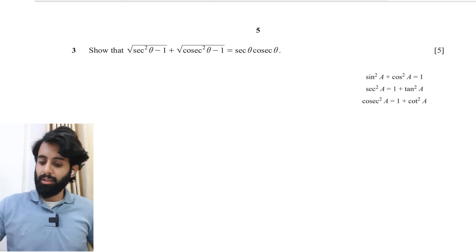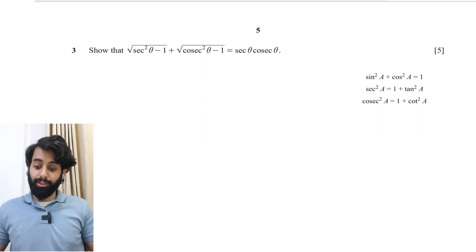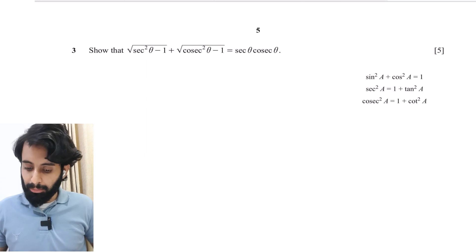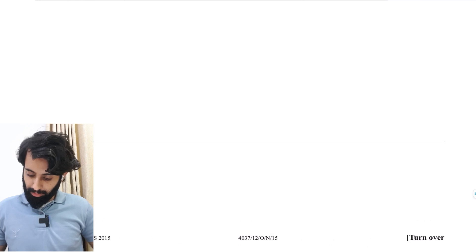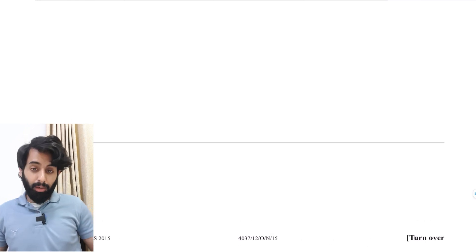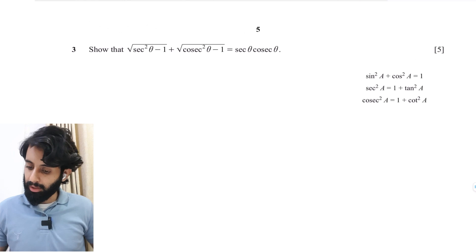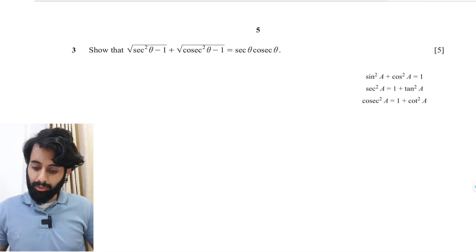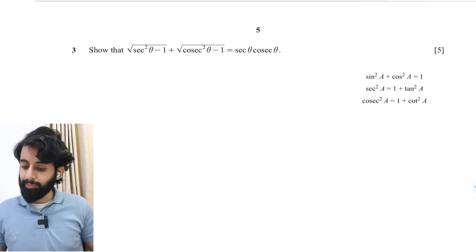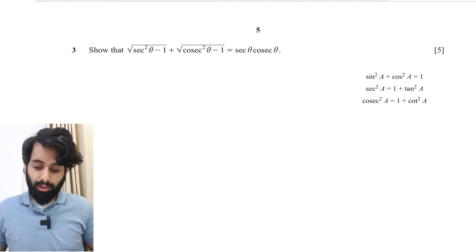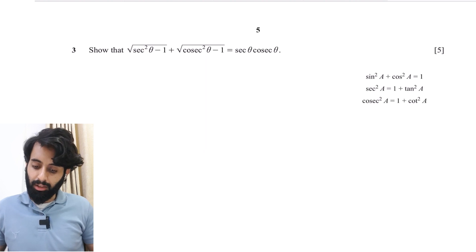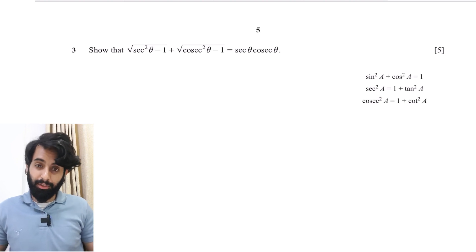In this video we're going to be solving a trigonometry question on trigonometric identities. This question is from October/November 2015 Paper 1 Variant 2 — question number three. It asks us to show that √(sec²θ − 1) + √(cosec²θ − 1) is equal to sec θ · cosec θ, and it's a five-mark question.